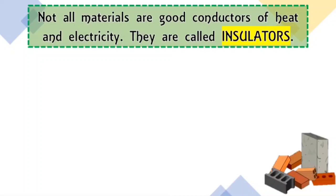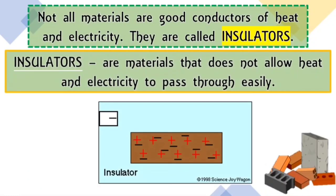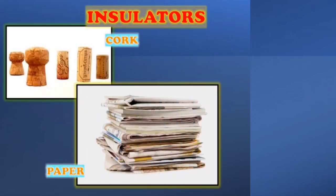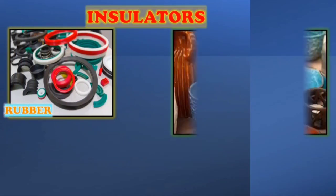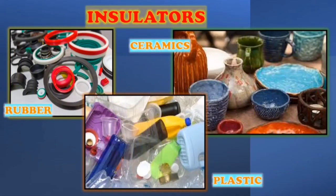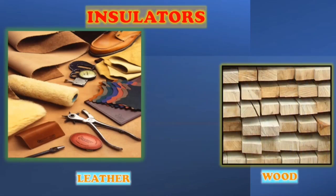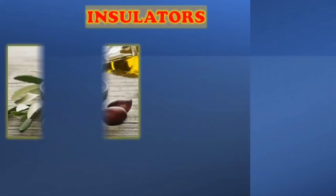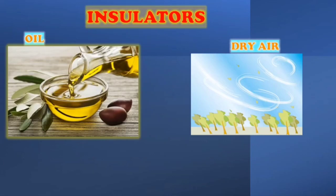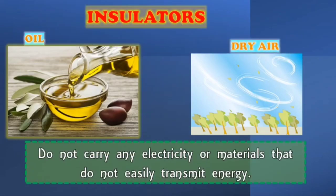Not all materials are good conductors of heat and electricity. They are called insulators. Insulators are materials that do not allow heat and electricity to pass through easily. Examples are cork, paper, fabric, rubber, ceramics, plastic, leather, wood, and glass. We also have bricks, tiles, oil, and dry air — these are examples of insulators that do not carry electricity or materials that do not easily transmit energy.